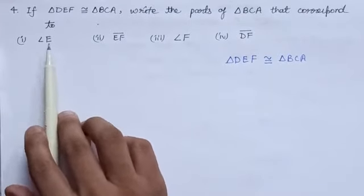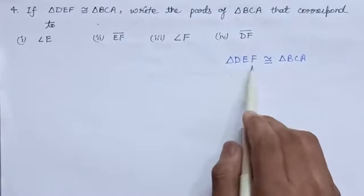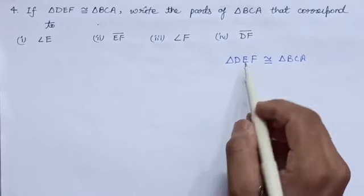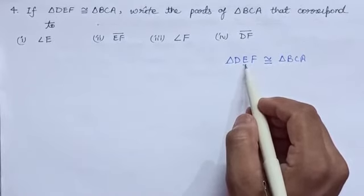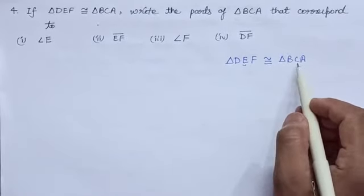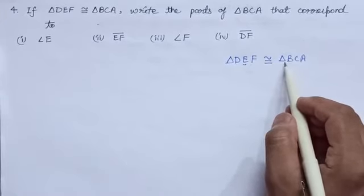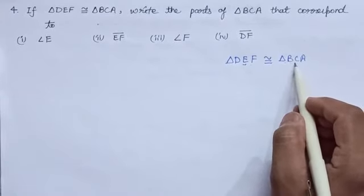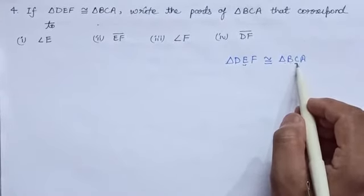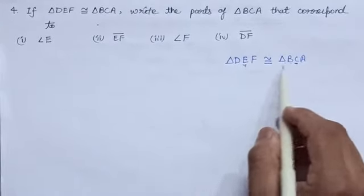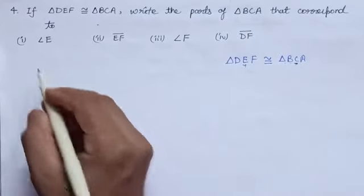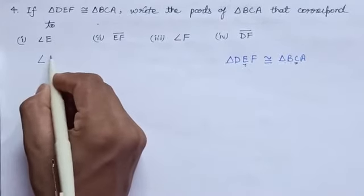First, let us see angle E. When you look at triangle DEF, you can see that E comes in the middle. So we have to find the middle term in triangle BCA. In triangle BCA, the middle term is C. Hence, the corresponding angle to angle E is angle C. So our answer is angle C.